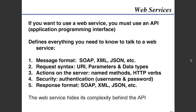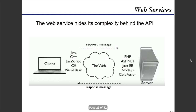The main thing to really note here is that the web service hides its complexity behind the API. We can have different types of code running on the server and the client and different types of interfaces between those things, all of them very complex and different. But as long as we agree on how we're going to communicate, the API can allow us to request messages and respond with messages.